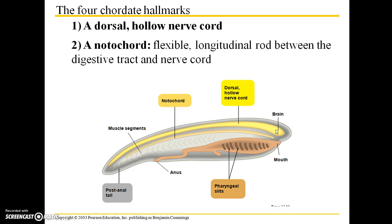The second chordate hallmark characteristic is a notochord, which is a flexible longitudinal rod situated between the digestive tract and the nerve cord, illustrated here as this orangish line.